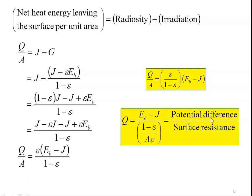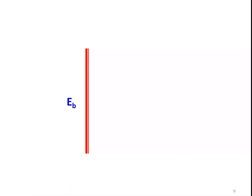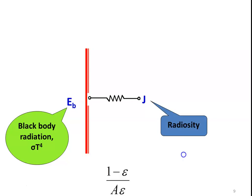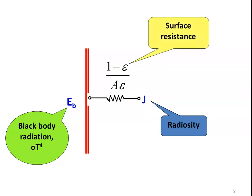In this expression, (Eb − J) is called the potential difference and (1 − ε)/(A·ε) is called the surface resistance. Using the electrical analogy for radiation heat transfer, Eb is the black body emissive power σT⁴, J is the radiosity, and they are connected by the surface resistance (1 − ε)/(A·ε). Two exchanging surfaces will each have their own surface resistance depending on emissivity and area.